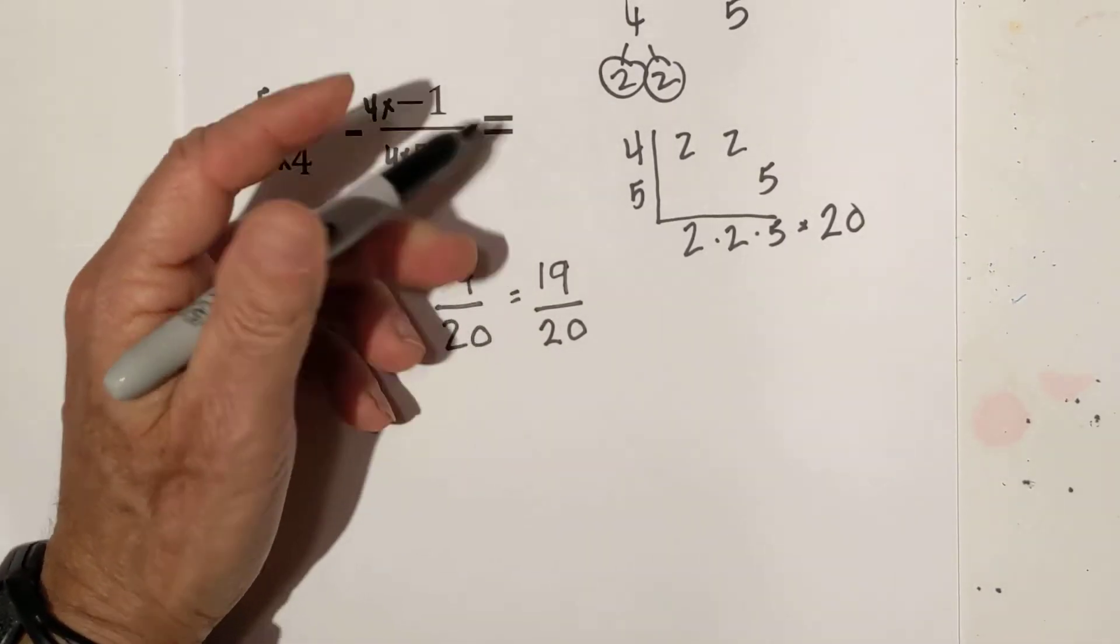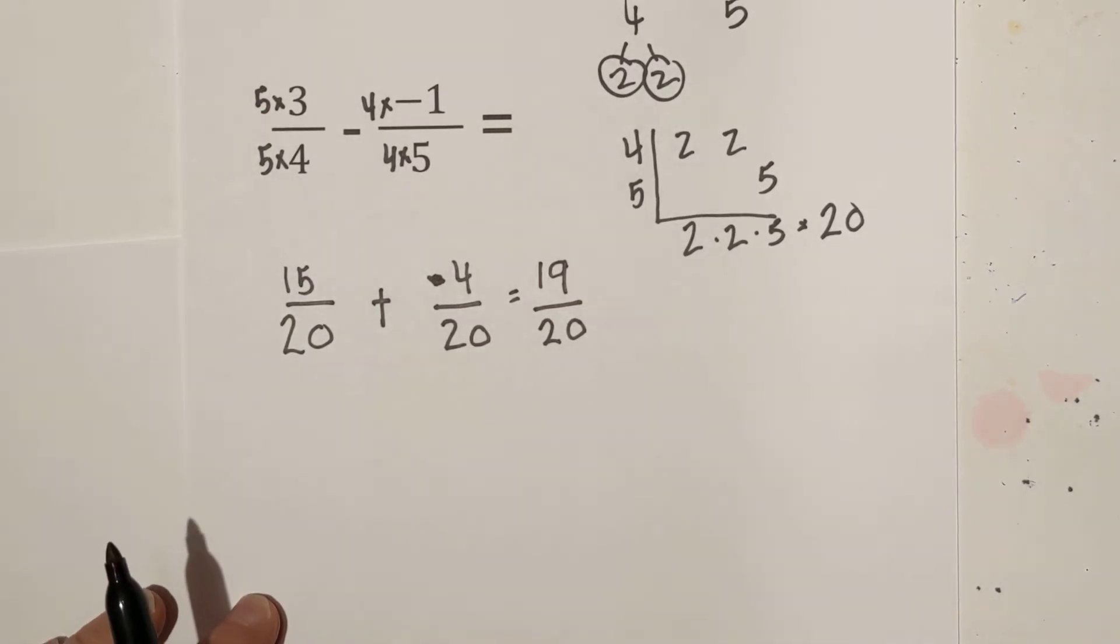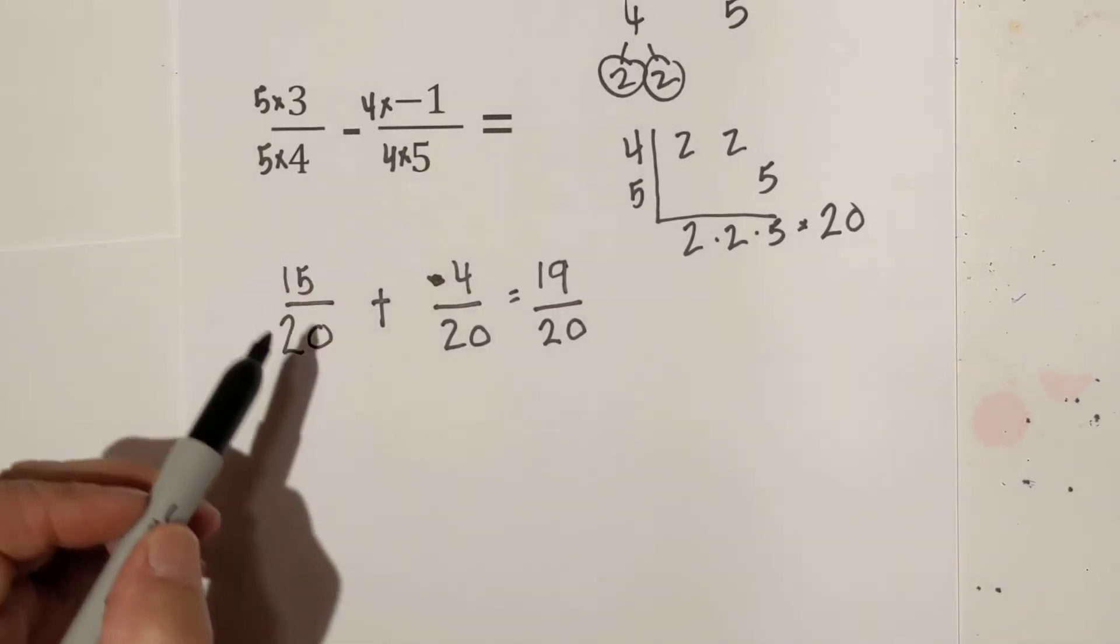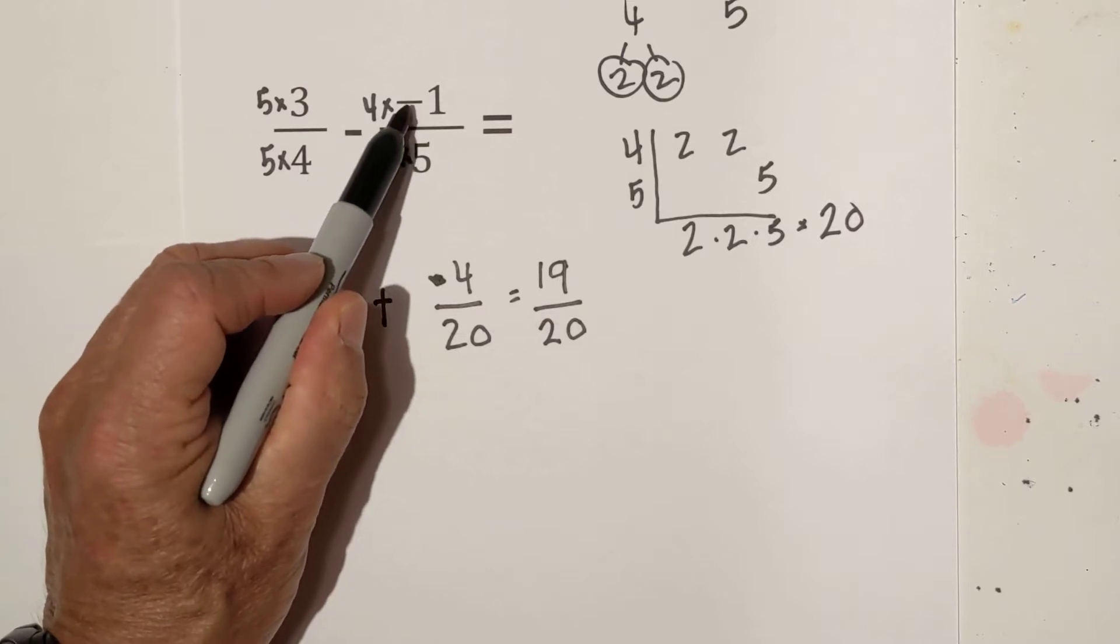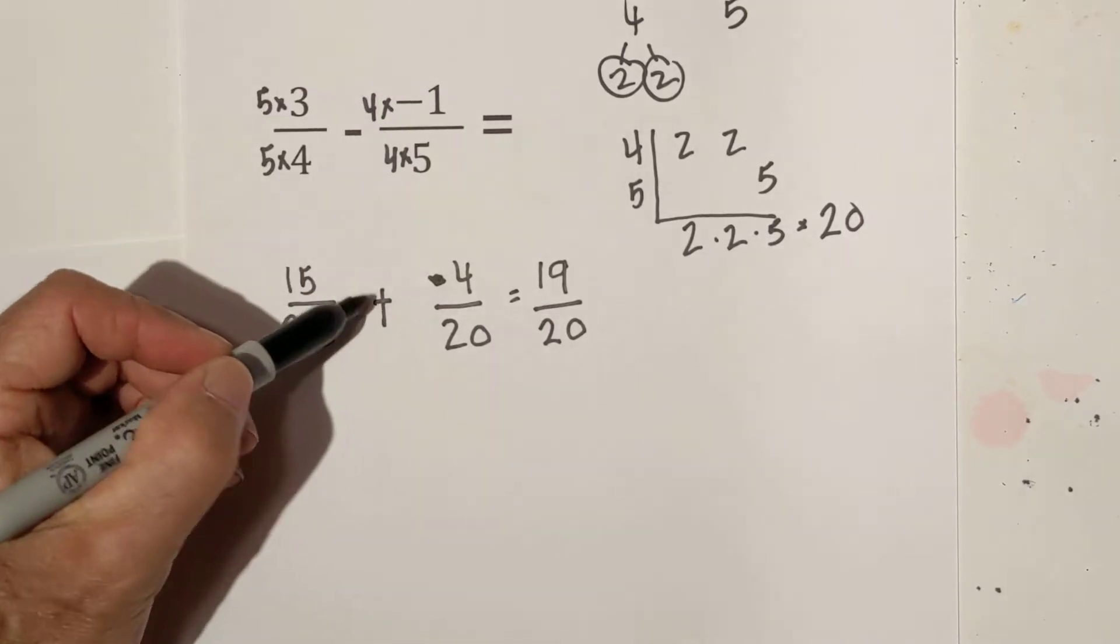Now 19 over 20, 19 is prime so it is simplified. The tricky part here is when you subtract a negative you can switch the sign to positive.